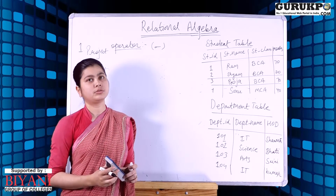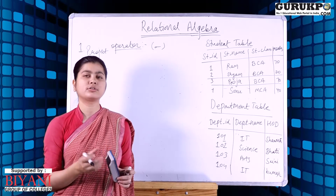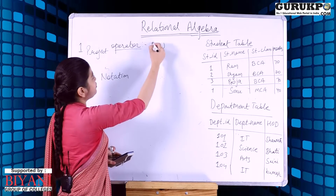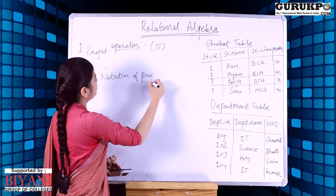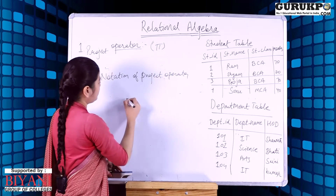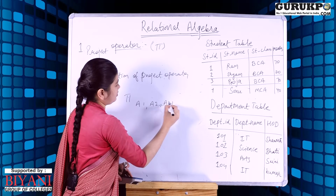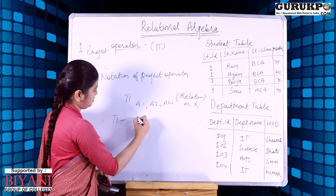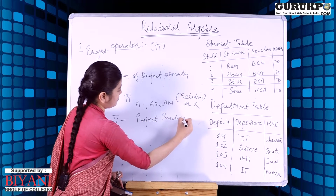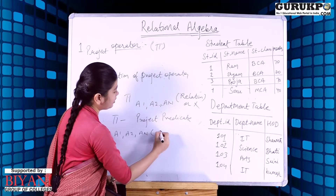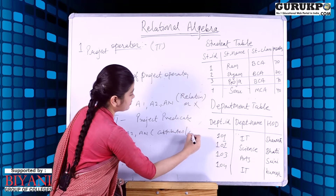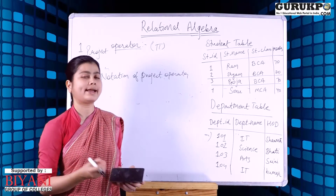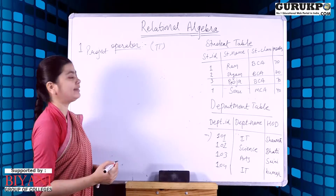The second operator is the project operator. The project operator is used to select certain columns from a relation. The notation for the project operator is pi. The expression is written as pi_{A1, A2, ..., An}(X), where A1, A2, and An are attributes or columns and X is a relation or table. Basically, the project operator selects columns from a table based on certain conditions.